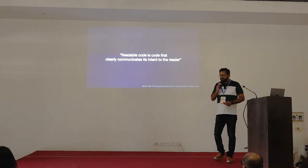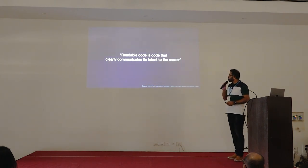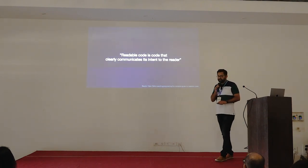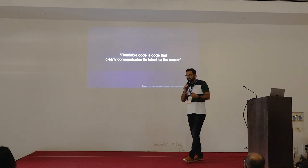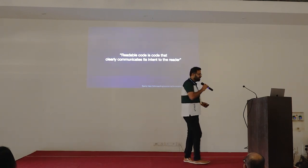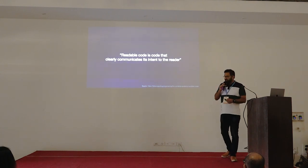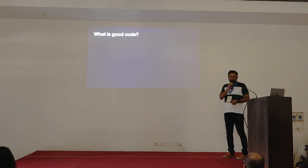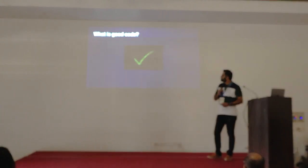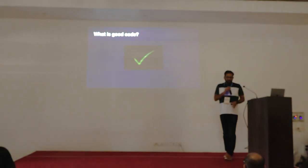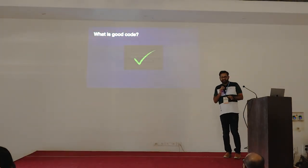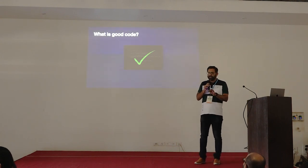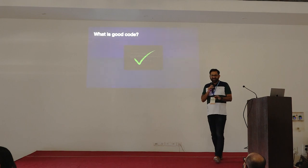What is readable code? Readable code is a code that clearly communicates its intent to the reader. Now why is this important? Why should your code communicate with you? First, let's try to understand what is good code. A good code is a code that works — that is the most important quality. Your code should work as expected without any bugs, otherwise we cannot call it good code.